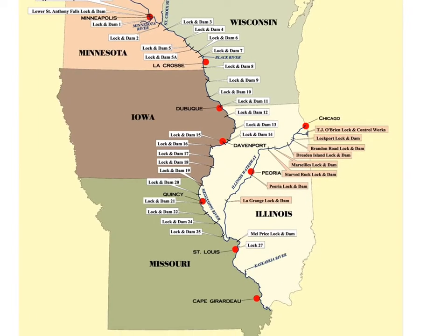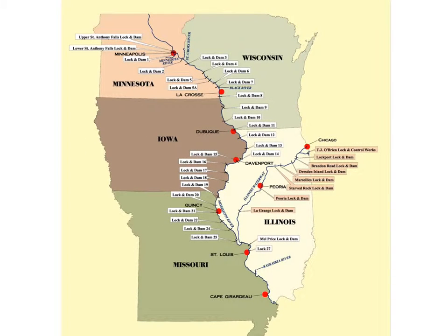This map shows one small section of the upper course, which includes dams and locks — areas where they can control the flow all the way along the Mississippi. In this section alone there are around 27 dams or locks. You can see that it provides quite a useful opportunity for the government to control the flow and reduce the risk of flooding in these areas.